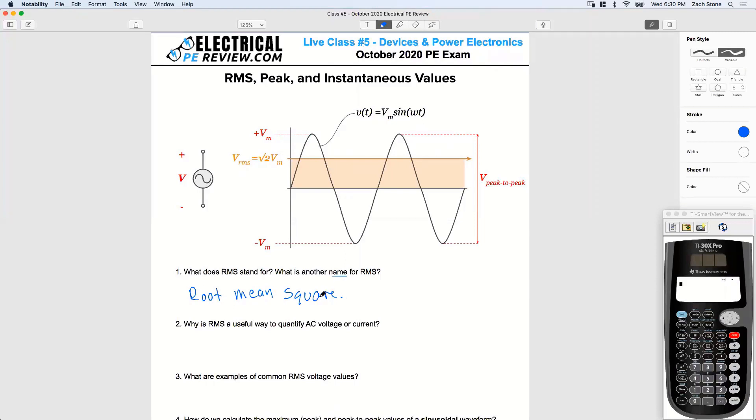What's another name for RMS? What's another name that describes this value? Effective. Yeah, good job, Roberto. This is also known as the effective value. These words are interchangeable: root mean square and effective.